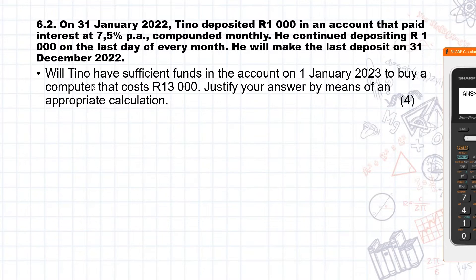Now the first question is, will Tino have sufficient funds in the account on the 1st of January 2023 to buy a computer that costs R13,000? Justify your answer by means of an appropriate calculation. Now the first thing that we see is that Tino is saving up, so he is doing a future value calculation. So we know that our monthly payments, which are X, is equal to R1,000. Our interest rate is equal to 7.5%, but it's compounded monthly, so we divide this by 12.